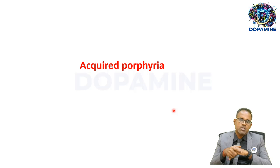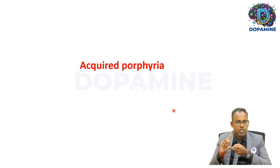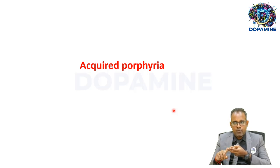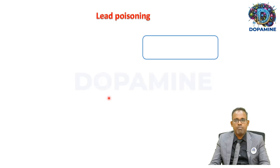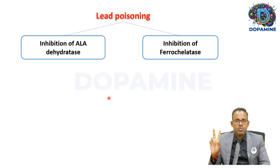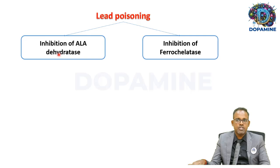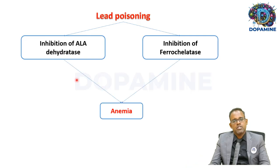Porphyria cutanea tarda and acute intermittent porphyria can be congenital. Acquired porphyrias also exist — a major cause is lead poisoning, which inhibits two enzymes: ALA dehydratase and ferrochelatase. This blocks heme synthesis, leading to anemia and a picture of porphyria.